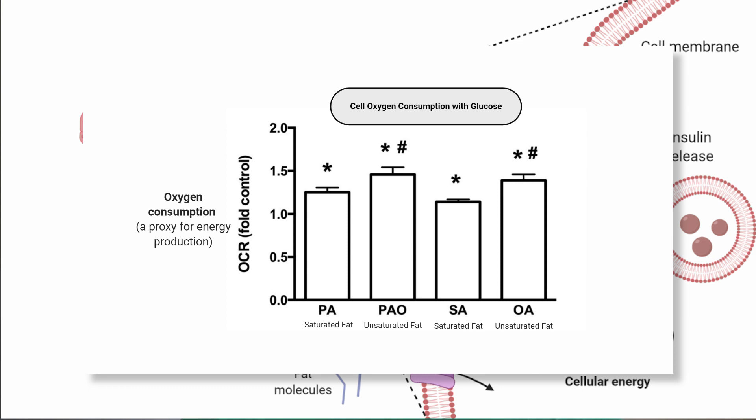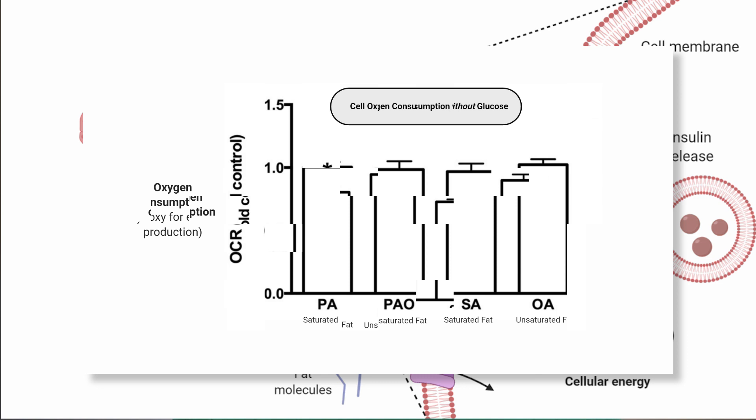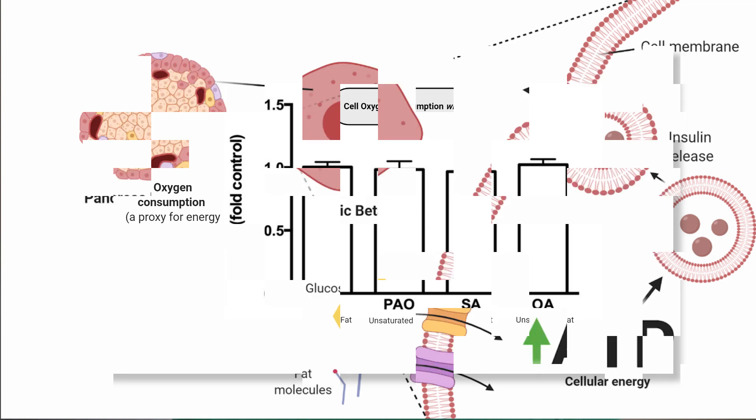They found that when glucose is present, the fats stimulate more energy production when added to the cells, again with an increase from monounsaturated fats. However, when glucose was not present, there was no increase in energy production by the mitochondria.